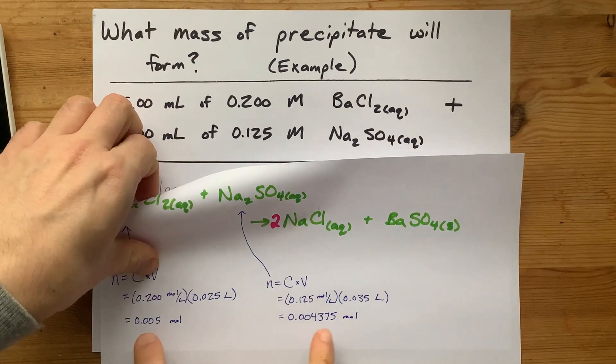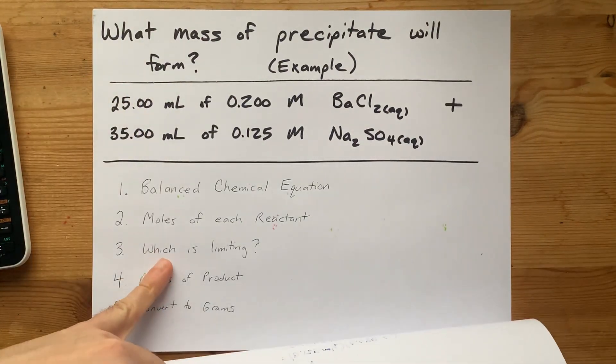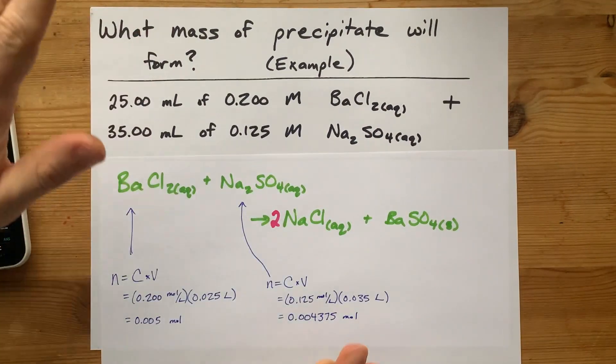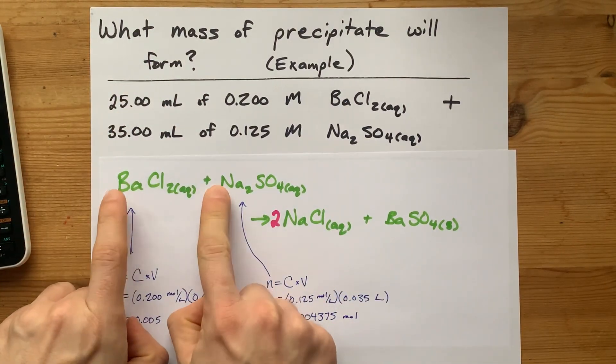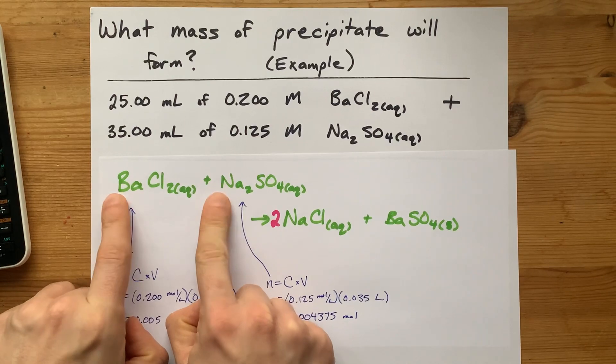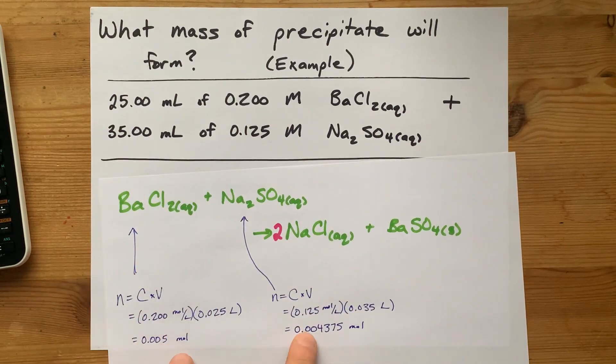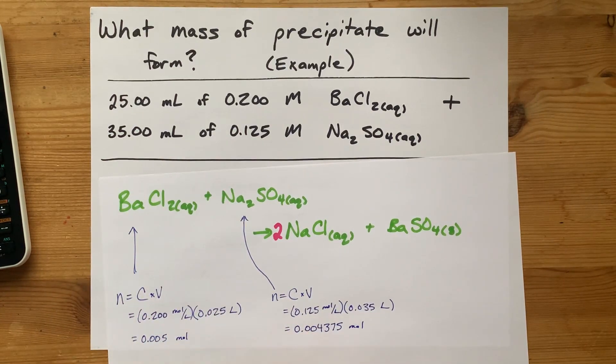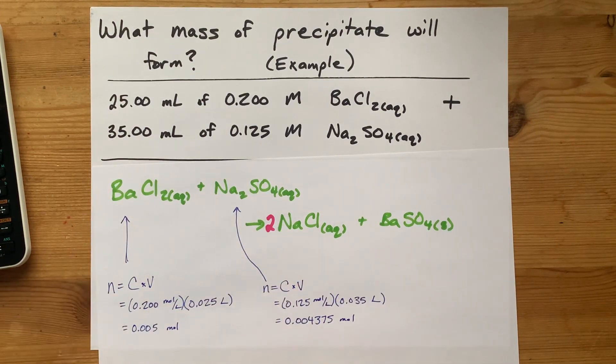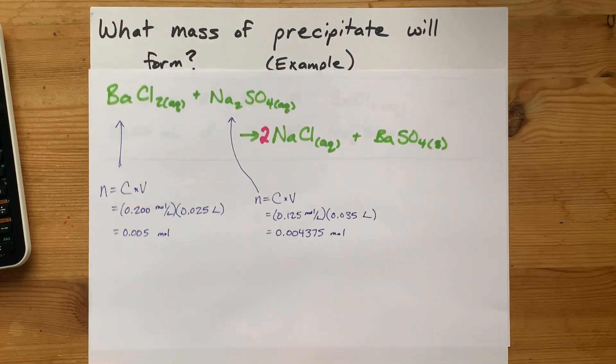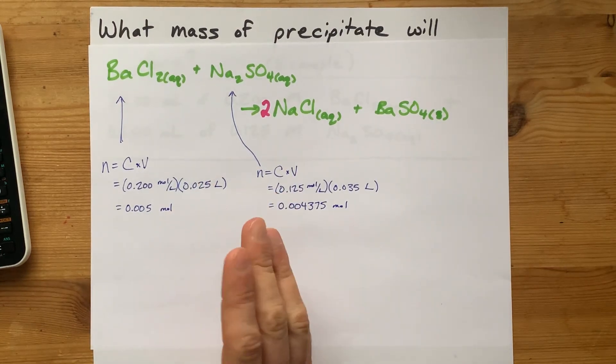All right. I've got the number of moles of each of the reactant. I have to figure out which one is limiting. Now, I can tell you which one is limiting right off the bat. We need one of each of these particles. And so the lower number is going to be the limiting reactant. But let's say that those numbers were different from each other. You'll have to figure out which one's limiting on your own.